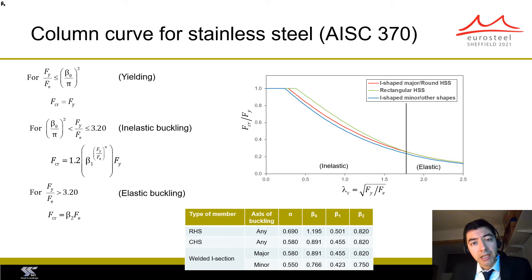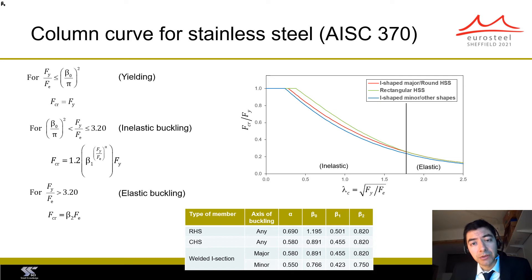There are clear similarities between the equations used to define the stainless steel global buckling curves and those used in AISC 360; however, there are a few differences worth mentioning. The first difference is that some constant coefficients used in the carbon steel buckling curve have been replaced with symbols beta_0, beta_1, and beta_2, so that the same equations can define the three different buckling curves. The coefficients differ from those for carbon steel due to the difference in material behavior.